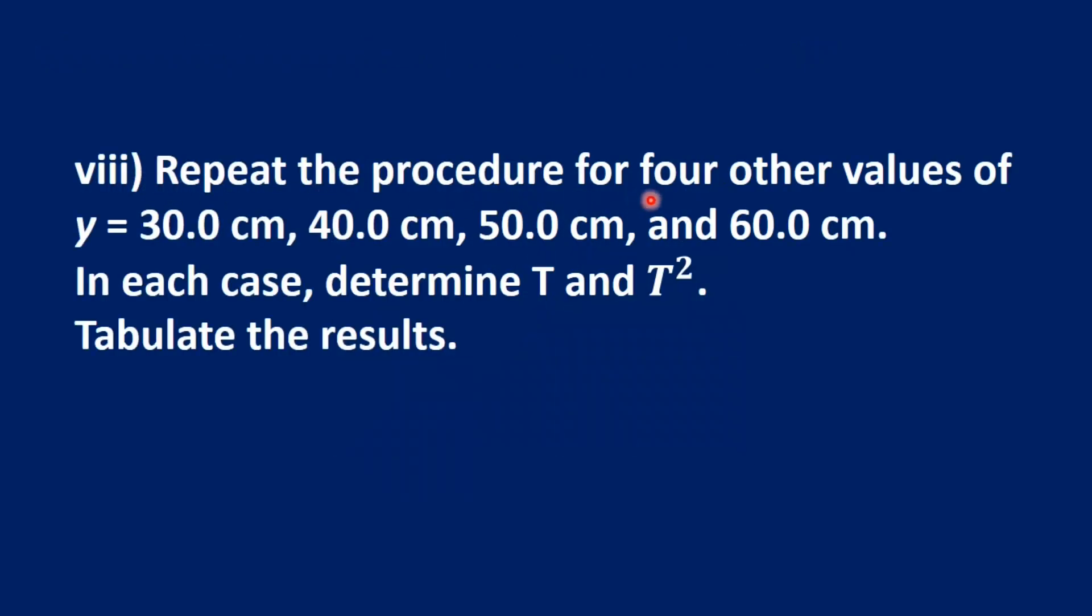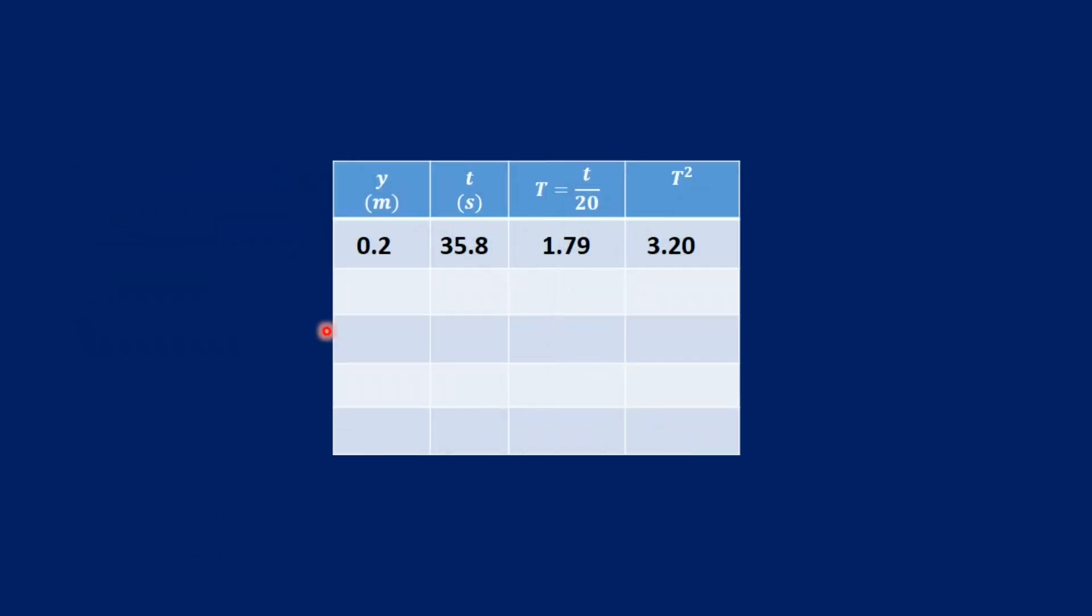We are going to repeat the procedure for four other values of y equal to 30, 40, 50, and 60 centimeters. In each case, we determine the period and then the period squared and then tabulate the results. So we measure 30 centimeters, that is 0.3 meters from the floor to the center of the pendulum bulb. Displace it and record the time for 20 complete oscillations. We get 33.5 seconds approximately. Then we divide the time T by 20 to get the period, and also square the period to get T squared.